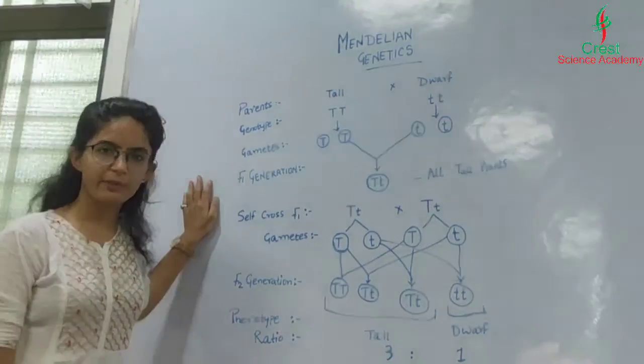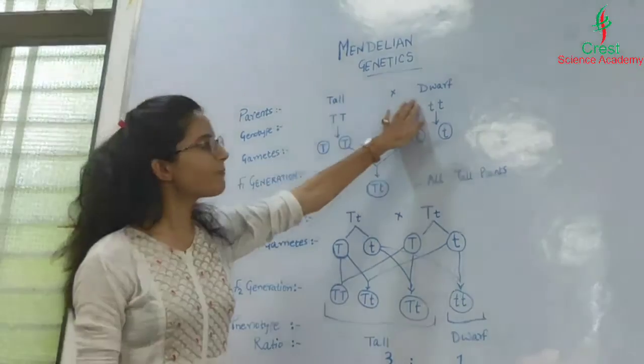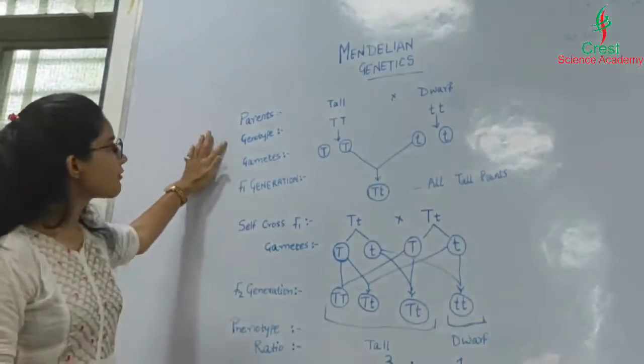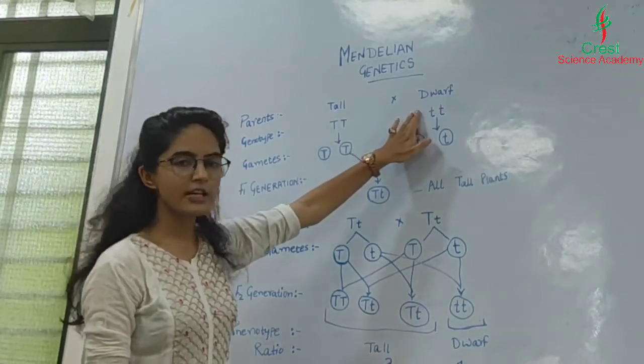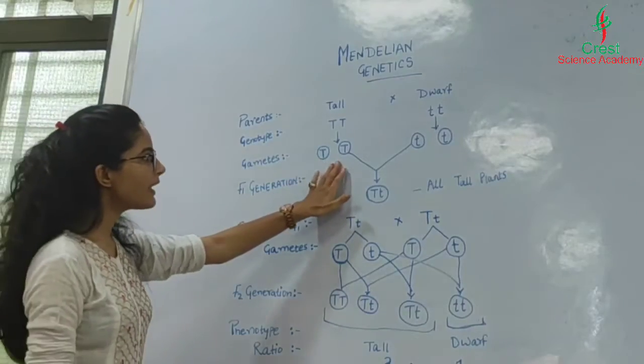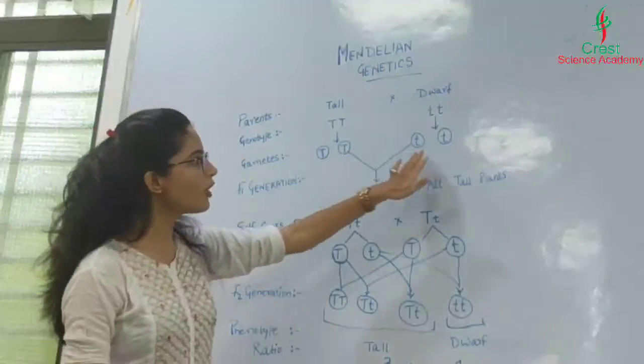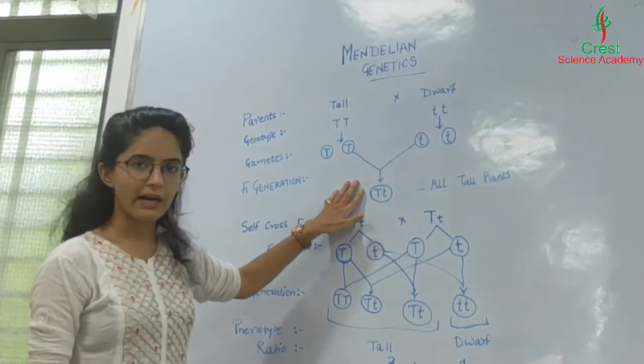This is the monohybrid experiment performed by Mendel. He selected tall and dwarf pea plants. The genotypes of the plants were capital T capital T for tall and small t small t for the dwarf plant. The gametes formed were capital T for the tall plant and small t for the dwarf plant. In F1 generation, Mendel got all tall plants.